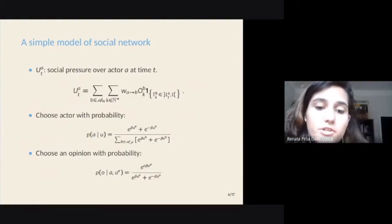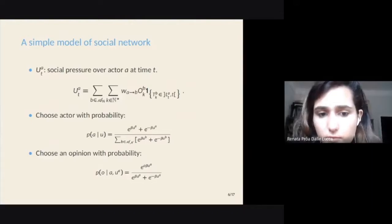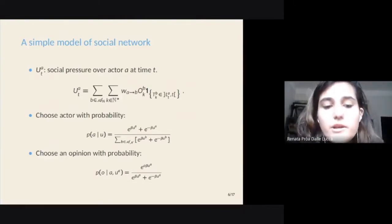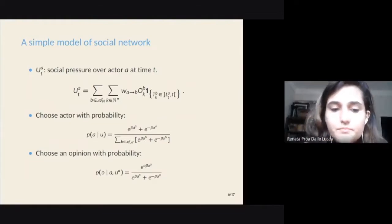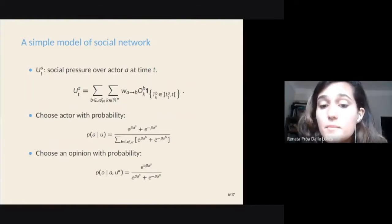The system's evolution can be described by the evolution of this random variable U_A^t, which characterizes the social pressure over A, or more equivalently, actor A's conviction at time t. We'll call it actor A's potential at time t, and it's given by the sum of the opinions emitted by the influencers of actor A, since the time A last emitted an opinion until time t.